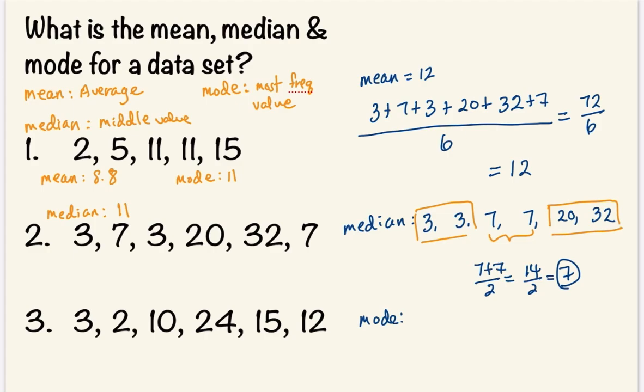And then our mode, the most frequent number. 3 occurs twice. 7 also occurs twice. The rest of the numbers occur one time. So our mode is both 3 and 7. Our mode is 3 and 7 since they occurred two times. And you can have multiple modes.